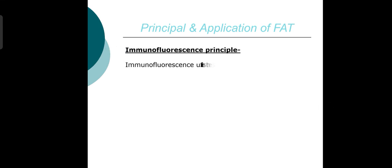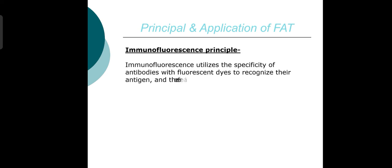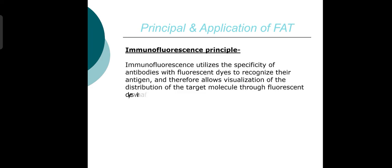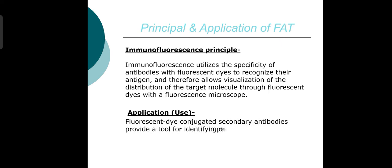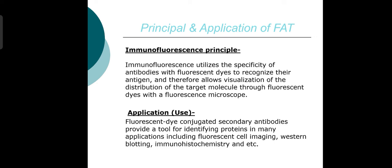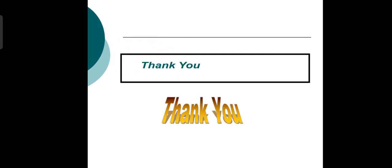Principles of immunofluorescence: immunofluorescence utilizes the specificity of antibodies labeled with fluorescent dyes to recognize the antigen and allows visualization of the distribution of the target molecule using a fluorescence microscope. Applications include fluorescent-conjugated secondary antibodies used for identifying proteins in cell imaging, western blotting, immunohistochemistry, and other techniques. Thank you.